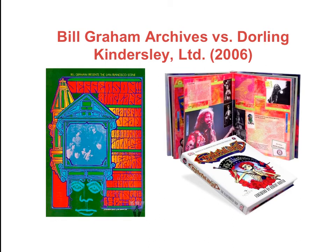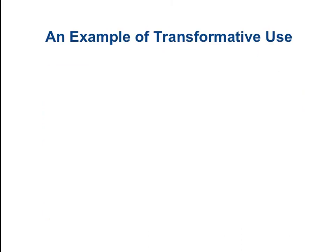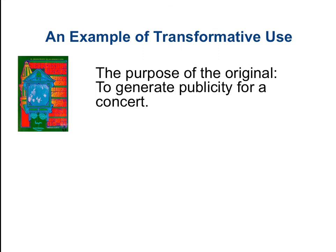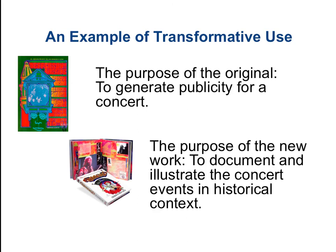They went ahead and put the posters in their book without permission or payment, and immediately Bill Graham Archives sued the publisher. The case went all the way up to the Second Circuit Court, where the judge made a determination balancing the rights of the owner — Bill Graham Archives — against the right of the new user, the publishing firm. This is an example of transformative use. The original posters were created to generate publicity for a concert that had long since come and gone, whereas in the coffee table book, the posters were used to document and illustrate the concert events in a historical context — a completely different intent and purpose, making it transformative.